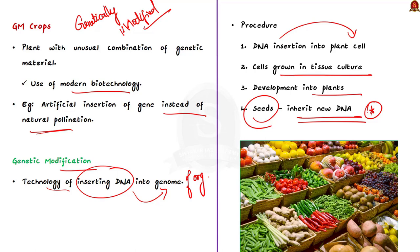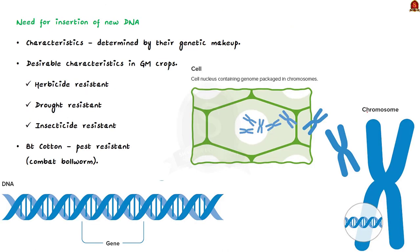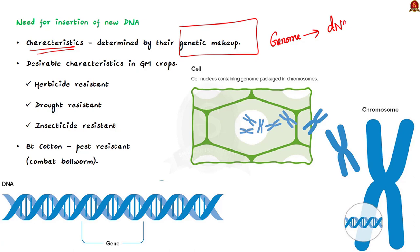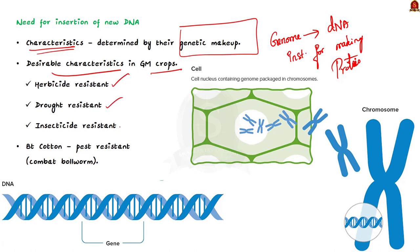Why is new DNA inserted into plant cells? We know that the characteristics of all living organisms are determined by their genetic makeup. The genetic makeup is the genome, and this genome consists of DNA. A gene is a region of DNA that contains instructions for making proteins, and these proteins decide the characteristics of plants. By inserting new genes into plant cells, we can obtain desirable characteristics in plants — we can make plants herbicide resistant, drought resistant, and insecticide resistant.